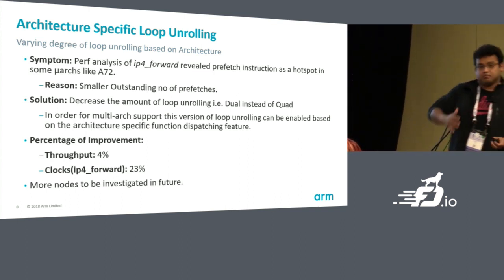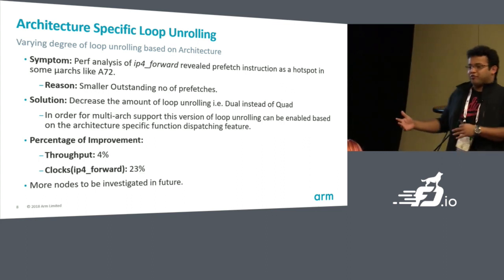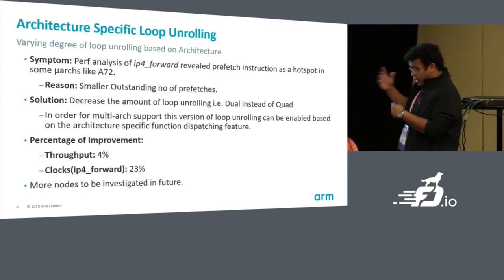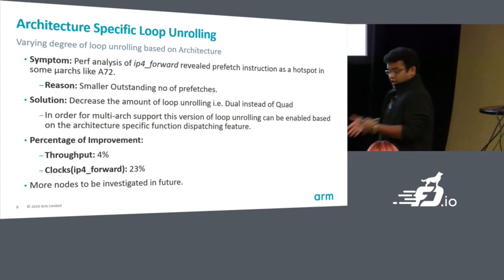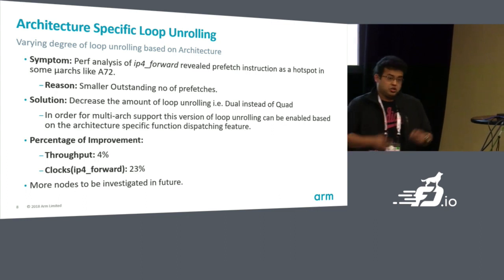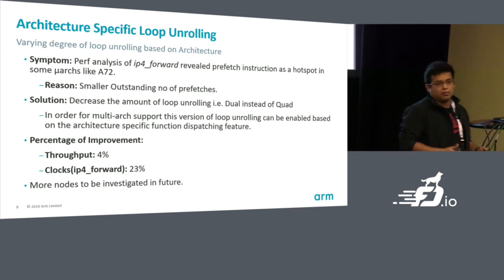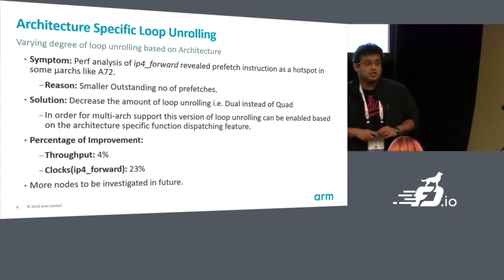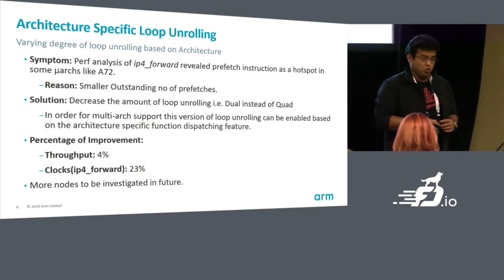We tuned to a dual loop for less aggressive prefetching. But if we changed IPv4 forward globally to a dual loop, that would affect everyone — and it's not a bottleneck in other architectures. So we compiled a specific version for A72. When you deploy a VPP binary on an A72, it detects that and deploys the optimized dual loop version of the IPv4 forward function. Take that same binary to a Qualcomm machine and you get the quad loop version. With the dual loop version of V4 forward, we got a 4% improvement in throughput and a 23% improvement in clocks. We plan to investigate more nodes and do more perf analysis.